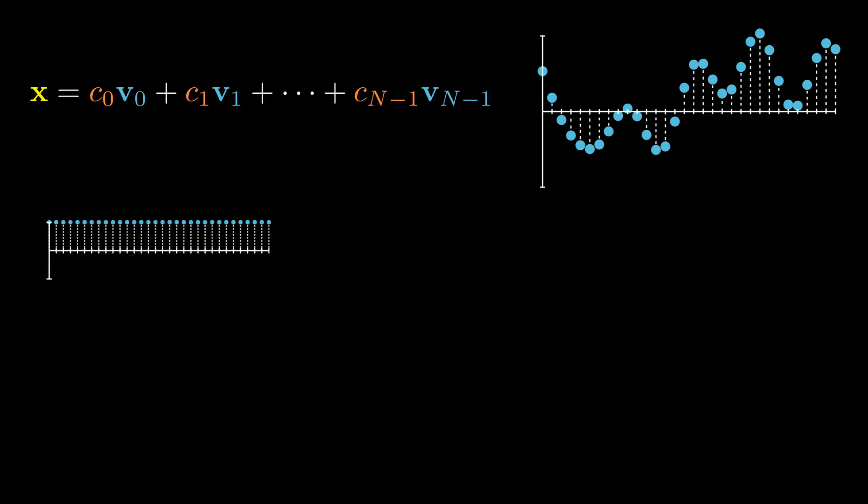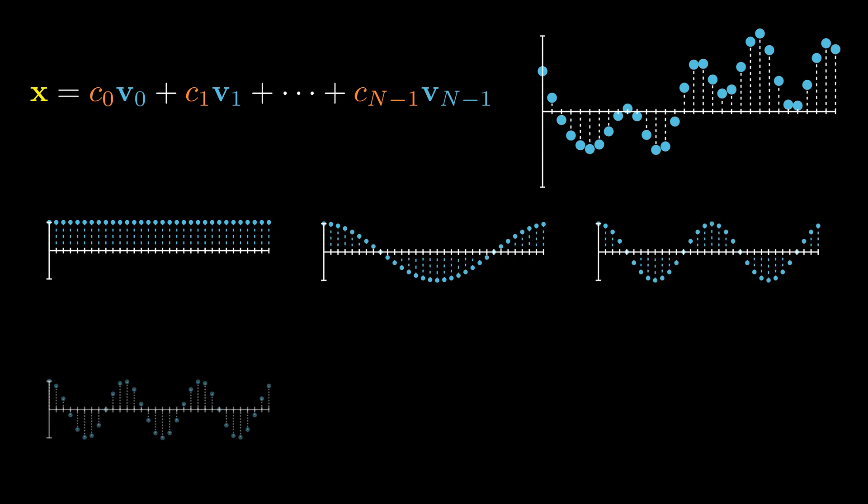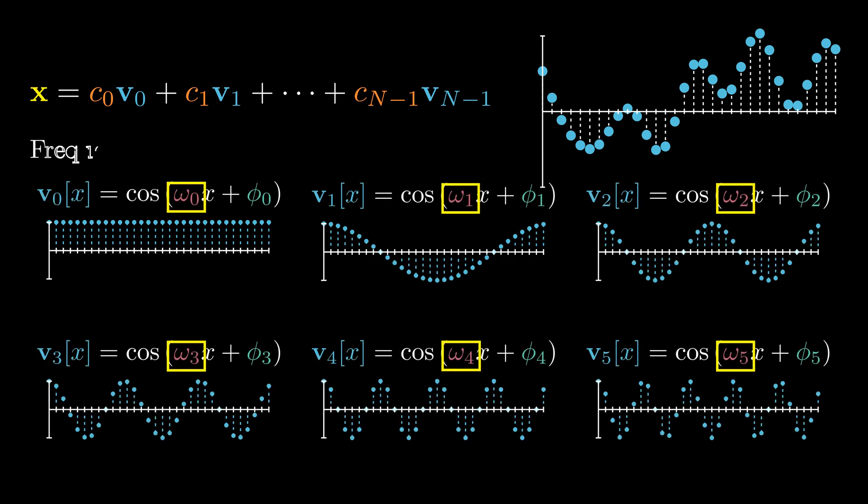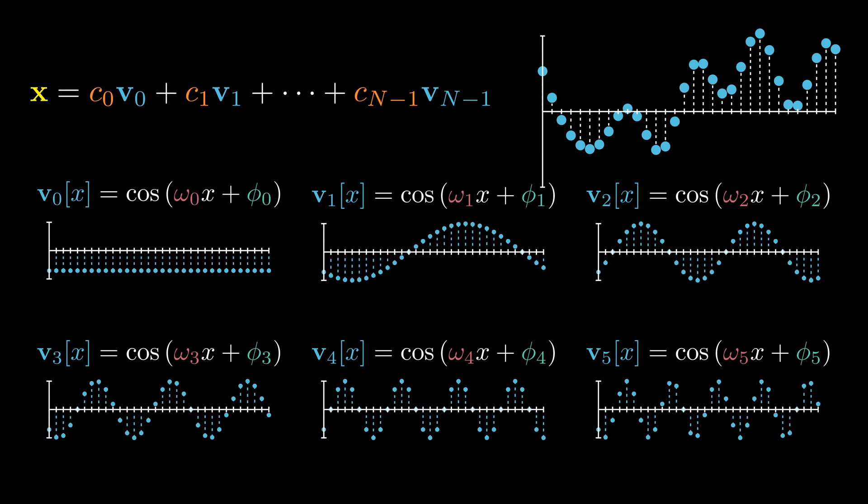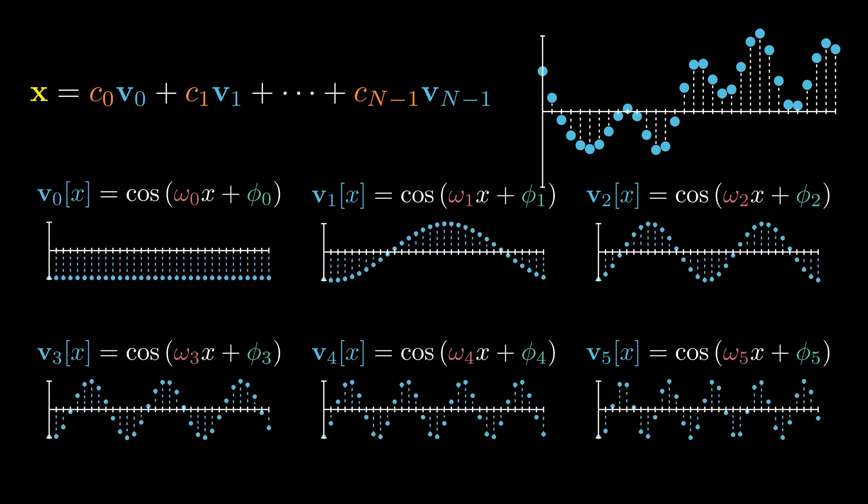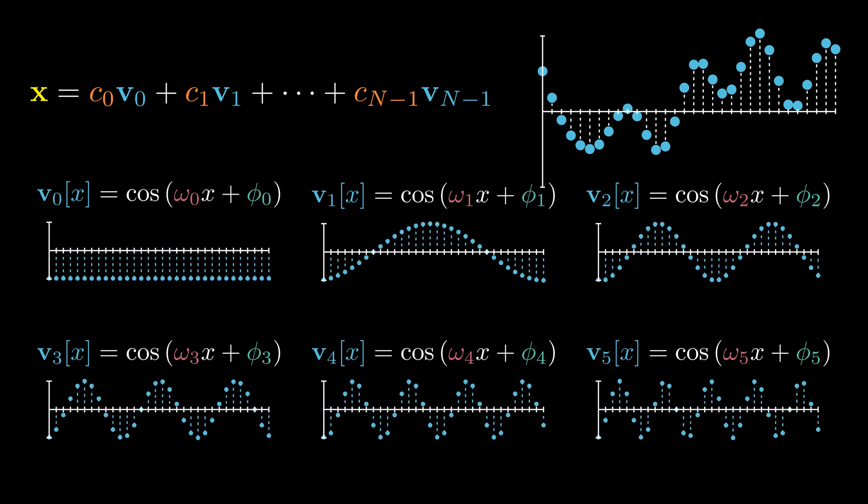One choice of basis is the cosine waves with varying frequencies. Here is an angular frequency omega k tells us how many cycles each basis has. For example, omega 1 has 1 cycle, omega 2 has 2 cycles, and so on.